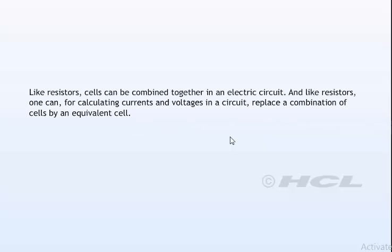Like resistors, cells can be combined together in an electric circuit. And like resistors, one can, for calculating currents and voltages in a circuit, replace a combination of cells by an equivalent cell.